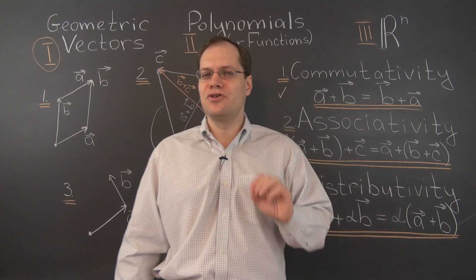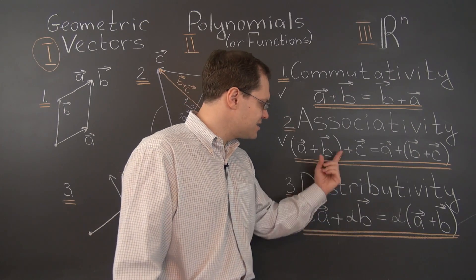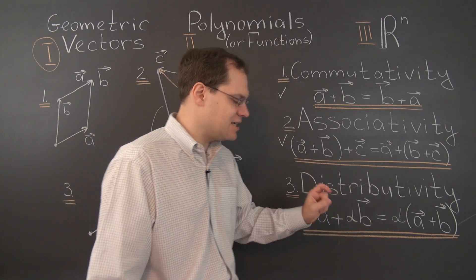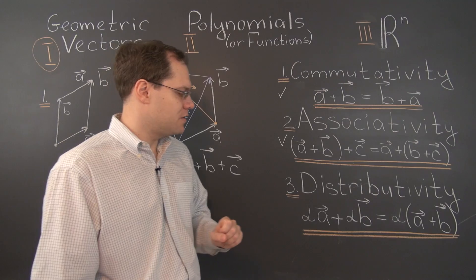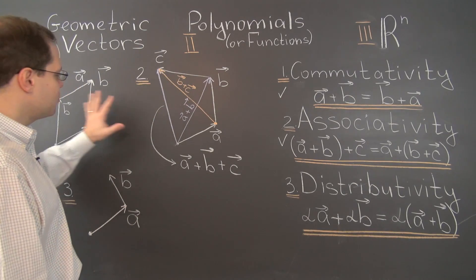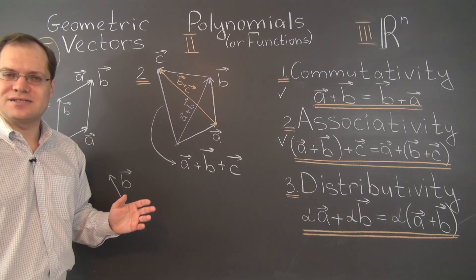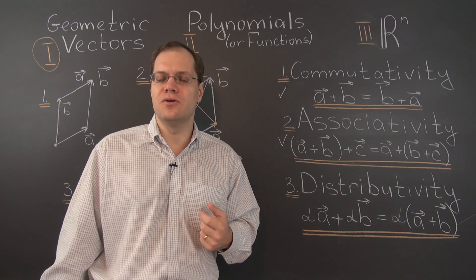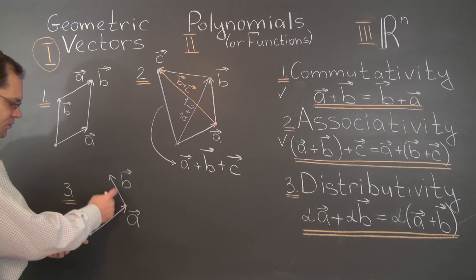All three of these properties have something to do with order not mattering — the order of the terms doesn't matter, the order of the operations doesn't matter. With distributivity, the two operations are multiplication by one and the same number and addition. It actually takes a little experience and knowledge of geometry to know this holds, but I'll do my best to convince you on an intuitive level, because that's much more important.